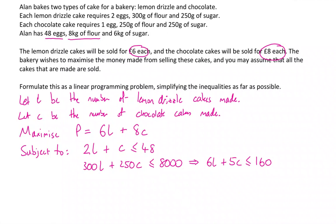Now finally one for sugar. We need 250 grams of sugar for each lemon drizzle cake and 250 grams of sugar for each chocolate cake. We have 6 kilos of sugar available, so that must be less than or equal to 6,000. If I divide that through by 250, I get l plus c is less than or equal to 24.